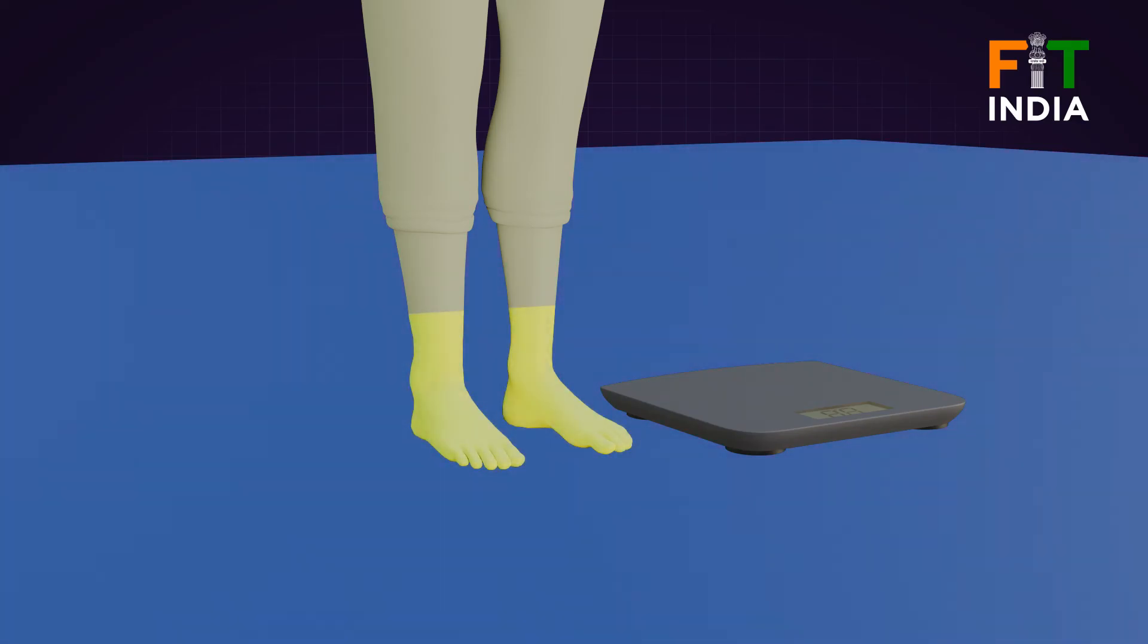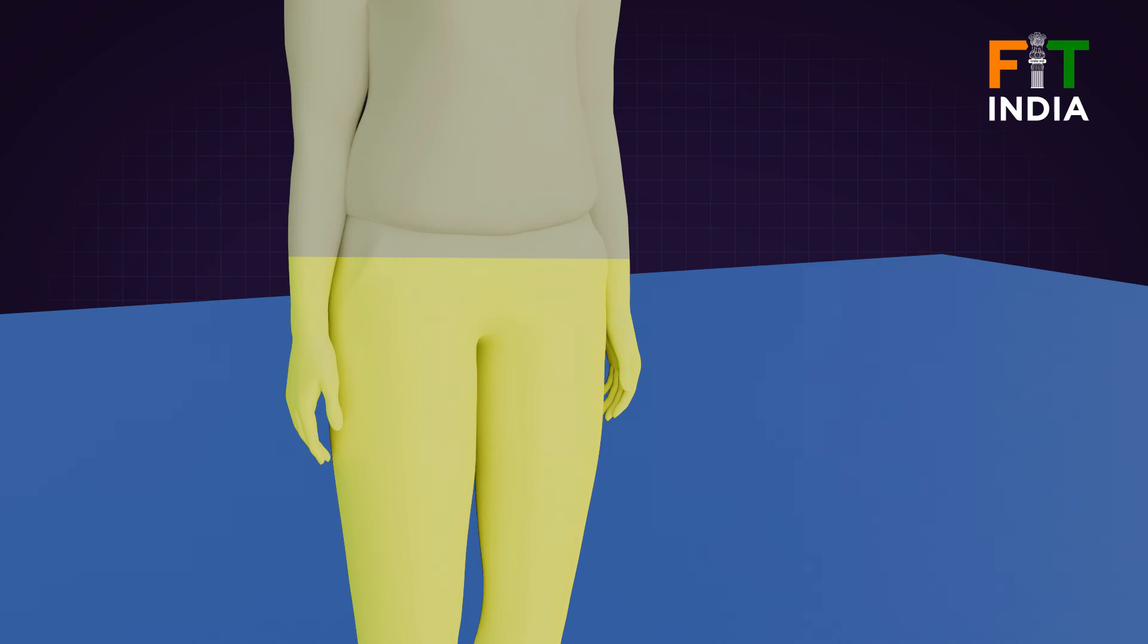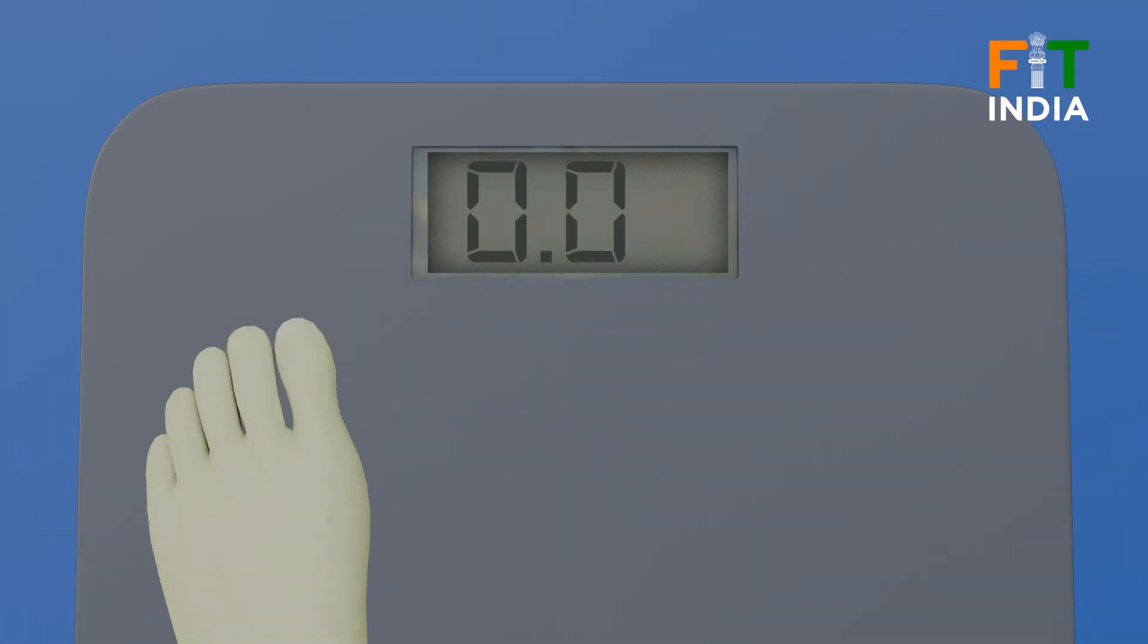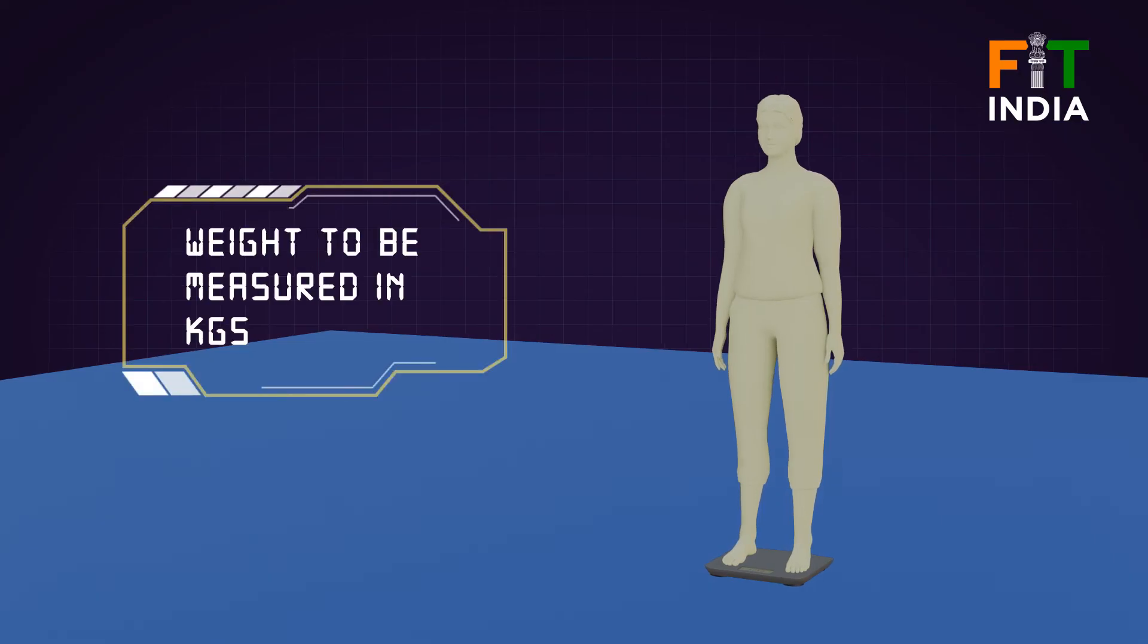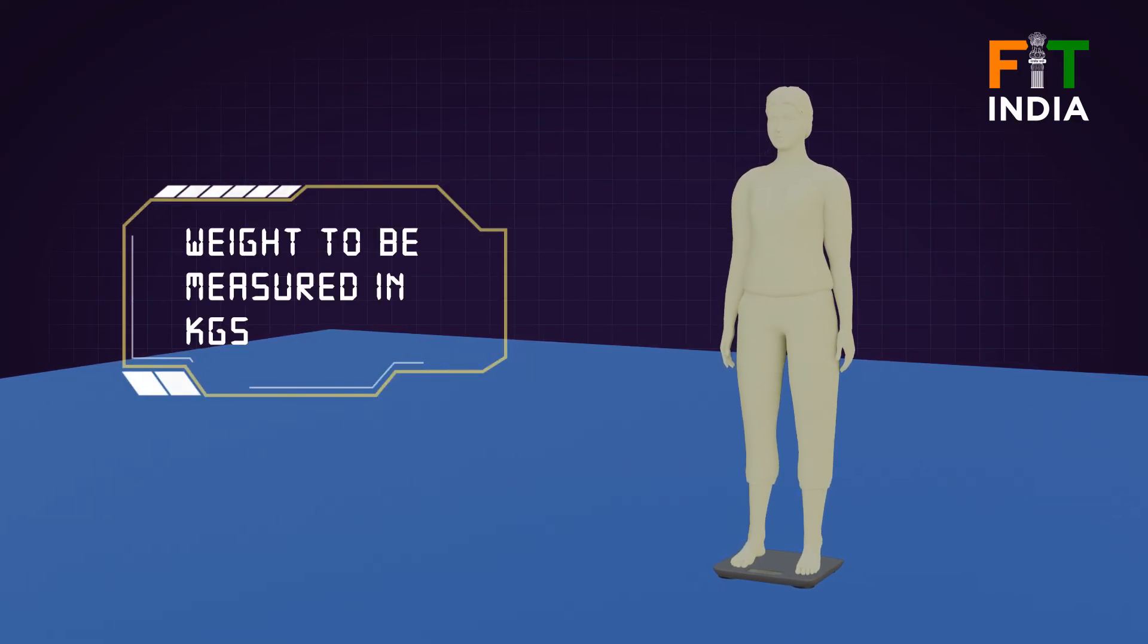The participant should remove his or her shoes and heavy clothing. The participant should stand with both feet in the center of the scale. The weight should be recorded in kilograms to the nearest decimal fraction.